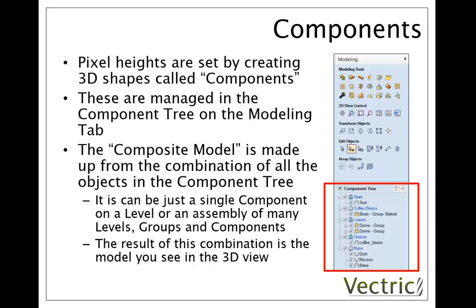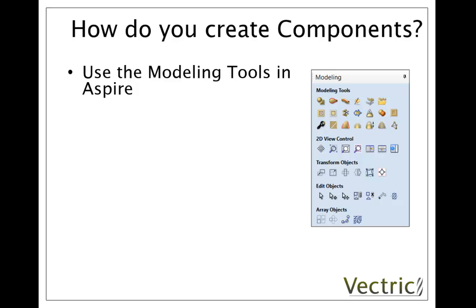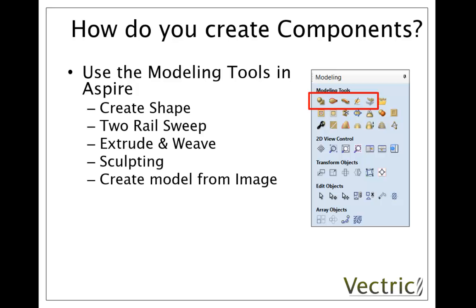So how do we generate these components? Basically there are a couple of different ways. We can use the modelling tools in Aspire — for instance take a vector and use something like the create shape tool to build it into a dome, or use things like the two rail sweep or the extrude and weave to create a swept shape. We also have the ability to do sculpting, so we can interactively work with the 3D object as if it were a sort of virtual piece of clay. Another option is to take an image and create a model from it — to generate a texture — and that's one of the ways we create the lithophane that you may have seen.